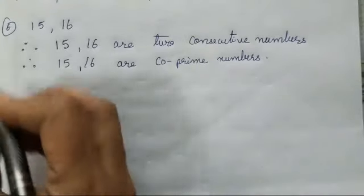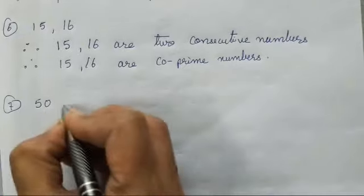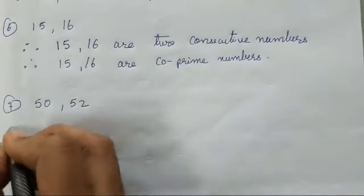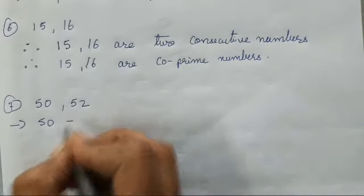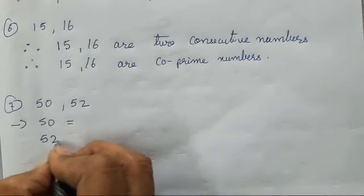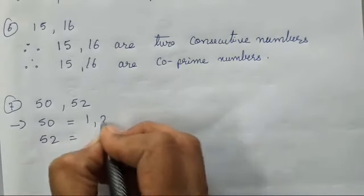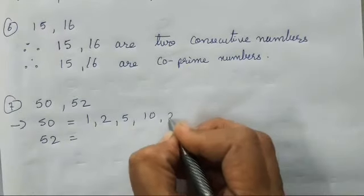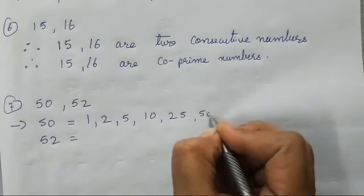So, these are supposed to be your co-prime numbers. Now, seventh one is 50 and 52. So, the factors of 50 and 52 are 50's factors are 1, 2, 5, 10, 25, 50.